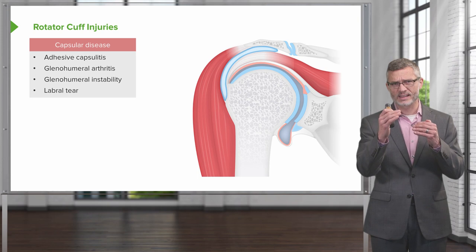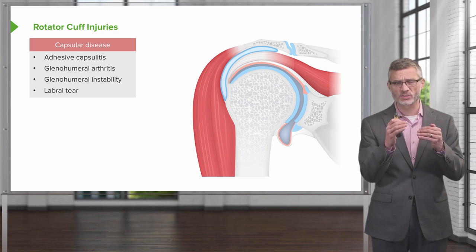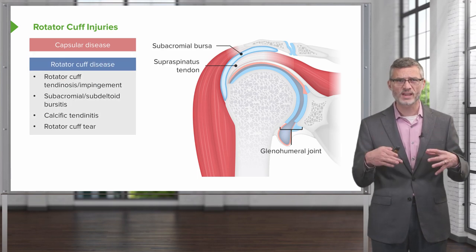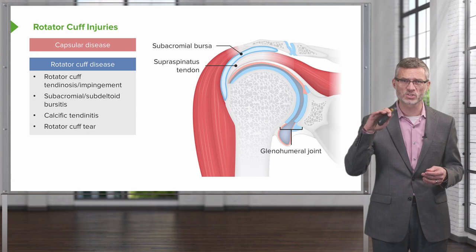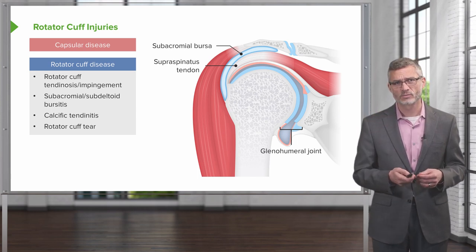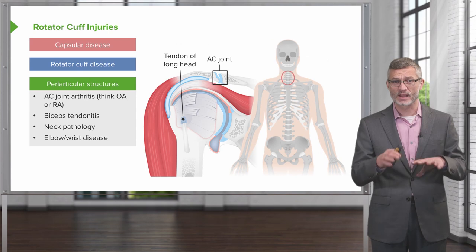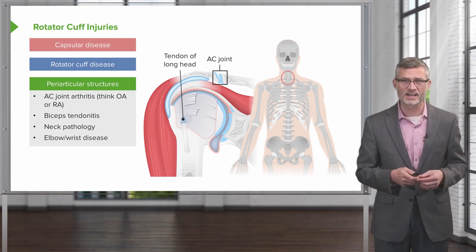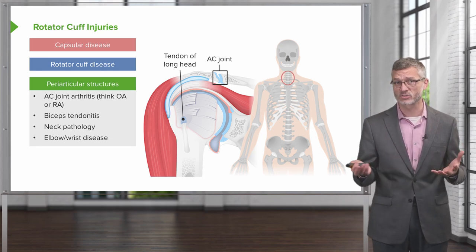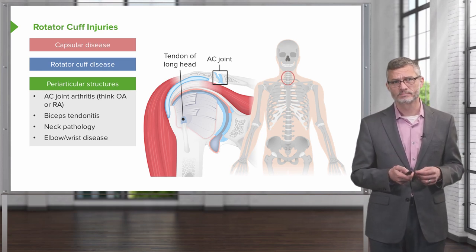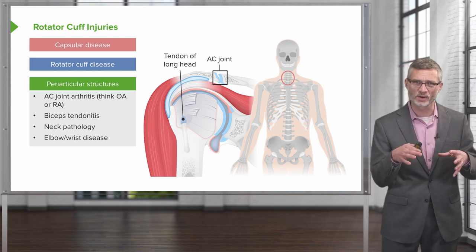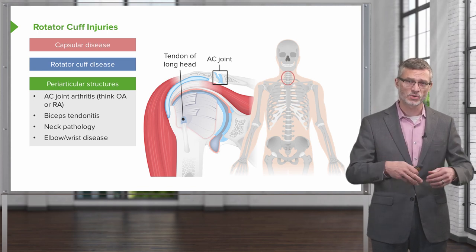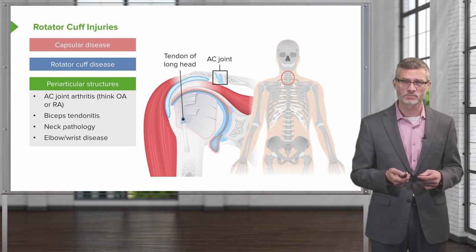Reviewing these anatomically: capsular disease involves the glenohumeral joint; rotator cuff pathology involves the subacromial bursa and the various rotator cuff muscles; periarticular structures include the AC joint and long head of the biceps tendon; and cervical neck disease should also be kept in mind. Remember, whenever examining one joint where pain is located, examine the joint above and below — in this case, make sure to look at the elbows as part of your exam.